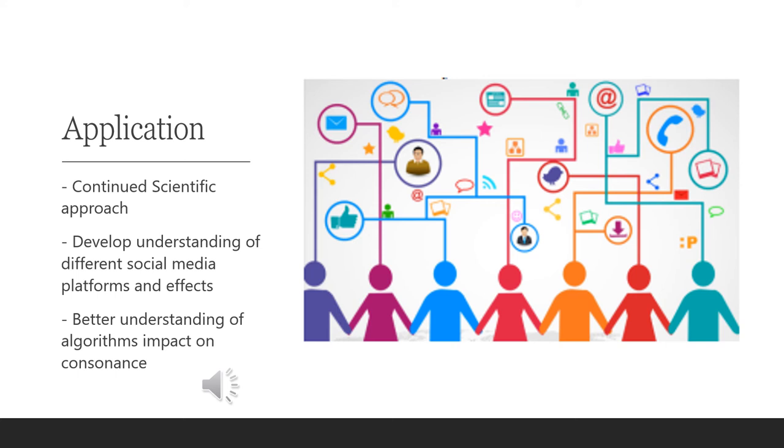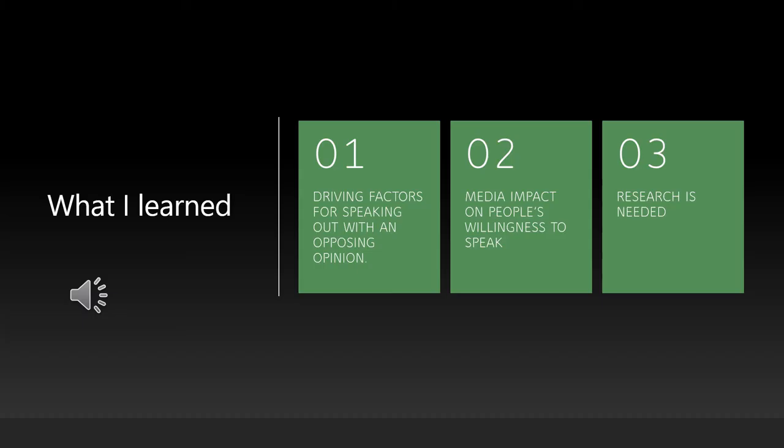There's also the question of how algorithms affect people because these social media platforms want people to stay on them. They point people in a certain direction for what they're seeing. With consonants, they're only going to see what they want to see or what elicits a very strong response from that person. There's a question as to how that affects people and how that affects whether they're willing to speak out on their opinion.